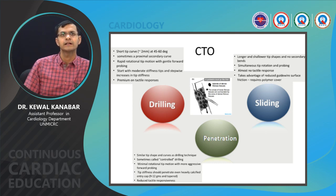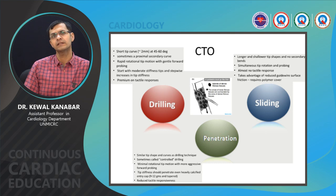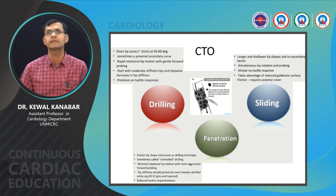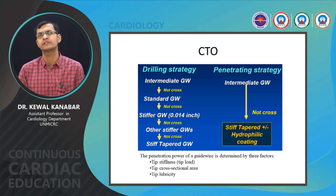Penetration, also known as controlled drilling, requires minimum rotation and slowly drilling into the lesion, escalating wire depending on the lesion type. Sliding requires longer and shallower tip shapes, simultaneous rotation and probing, and has almost no tactile response — drilling and penetration depend on tactile response. For sliding, we need wires with polymer coating like the Pilot series or Whisper series. In the drilling strategy, start with an intermediate guide wire; if unable to cross, go to a stiffer wire like Miracle 3 or 12, and finally to a stiff tapered guide wire.